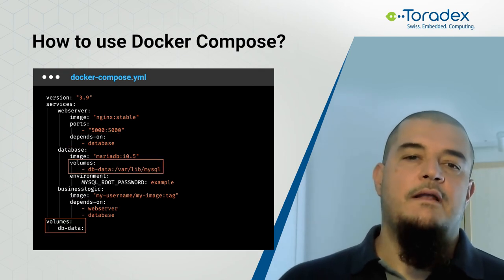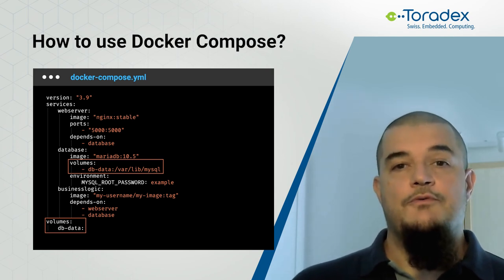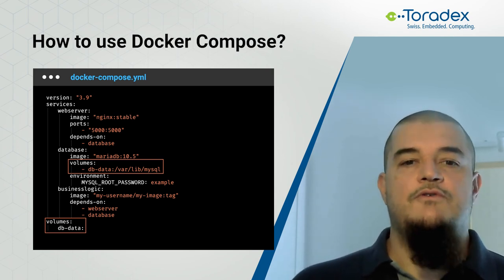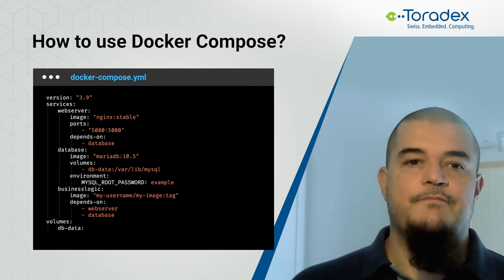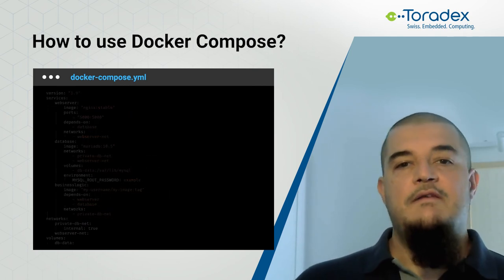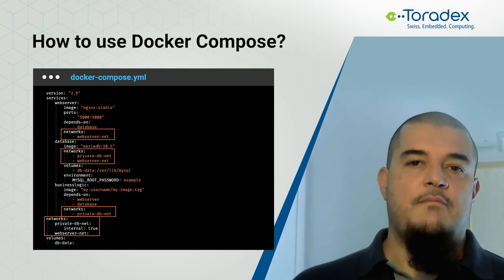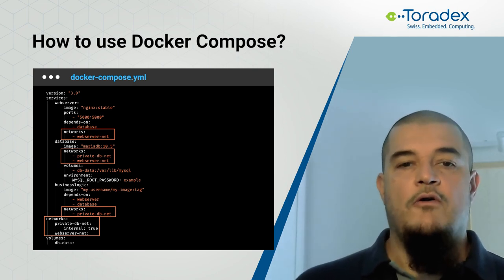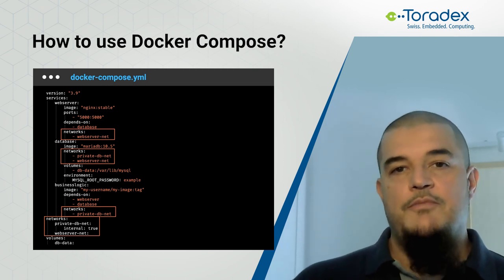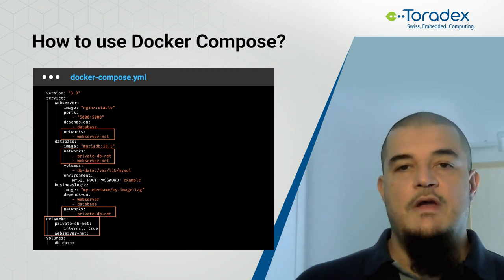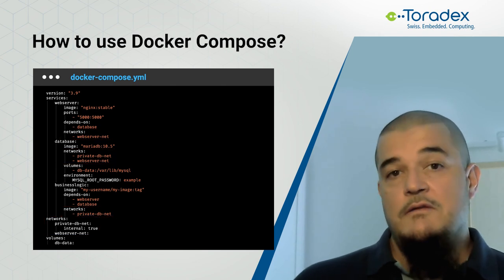In the Docker Compose file, you can also specify Docker volumes, and those can be useful to store data permanently on your device's file system. By defining networks, you can also have some of your containers communicating only on private networks. This will help you secure your system by not exposing services to the outside when it's not necessary.